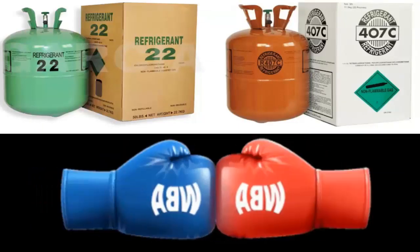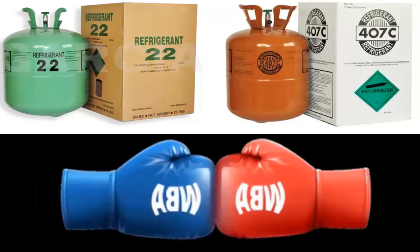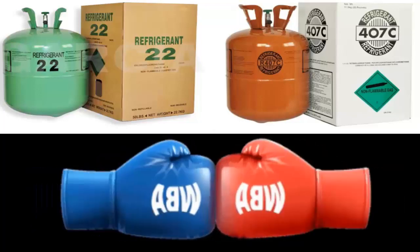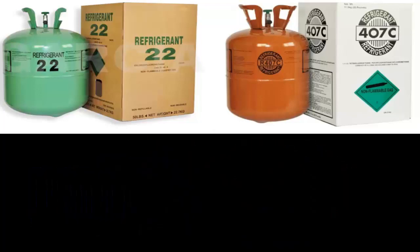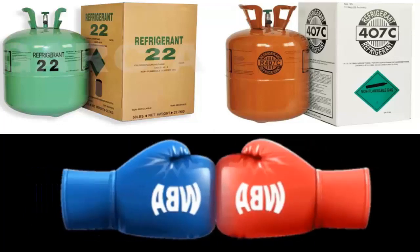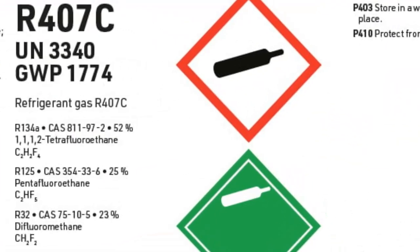In addition to the difference in composition, it is interesting to know the internal proportion of each component in R-407C. R-407C contains approximately 23% R-32, 25% R-125, and 52% R-134A. These components contribute to the properties and characteristics of the refrigerant gas.